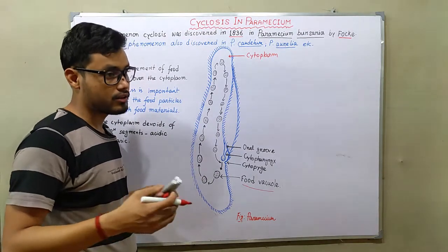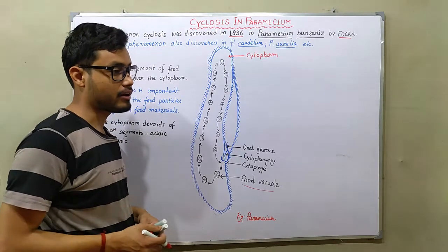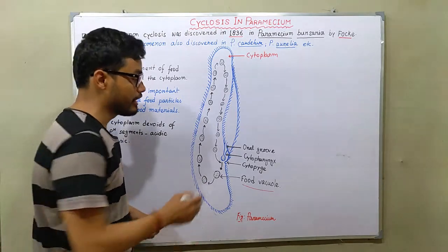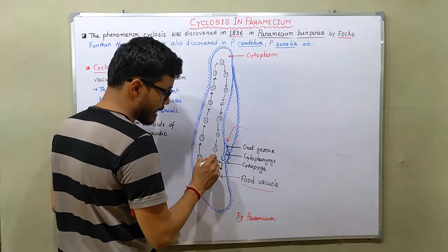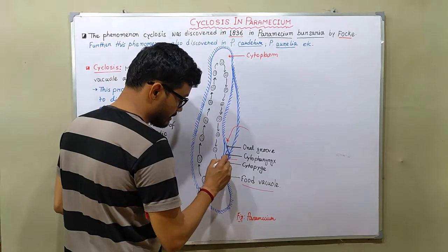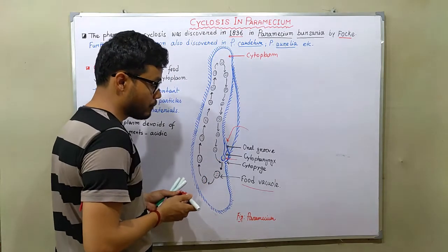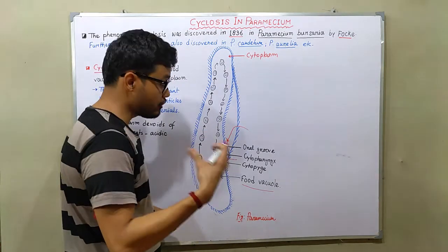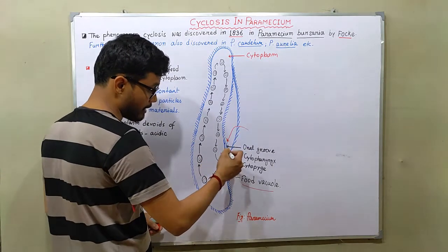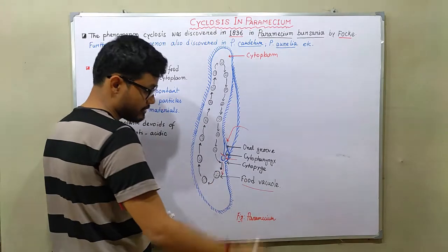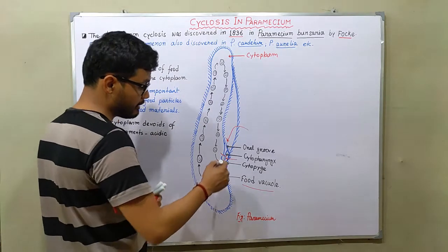Then the ingestion takes place. So first ingestion takes place from oral groove to the cytoplasm, and at the end of the cytoplasm a food vacuole is created. When the food vacuole is mature enough, then this food vacuole is detached from the cytoplasm and moves along with the cytoplasm.